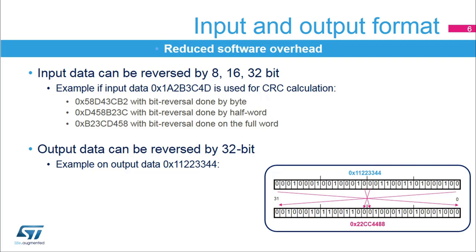The input data can be reversed and performed on 8 bits, 16 bits, and 32 bits, depending on the REV_IN[1:0] bits in the CRC_CR register. For example, input data 0x1A2B3C4D is used for CRC calculation as 0x58D43CB2 with bit reversal done by byte, 0xD458B23C with bit reversal done by half-word, or 0xB23CD458 with bit reversal done on the full word. The output data can also be reversed by setting the REV_OUT bit in the CRC_CR register.